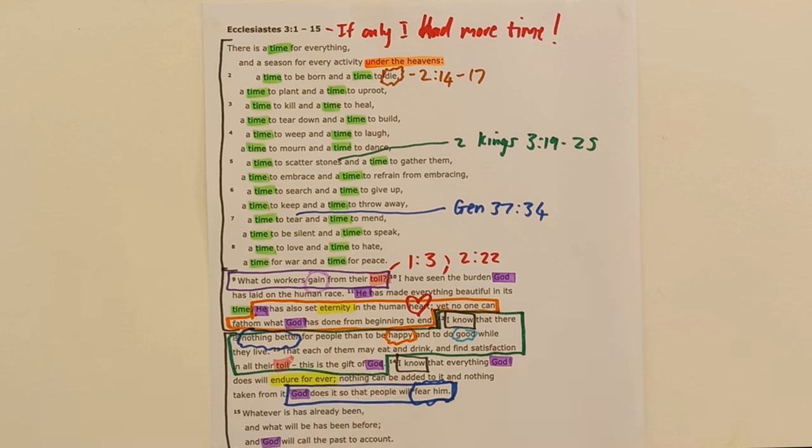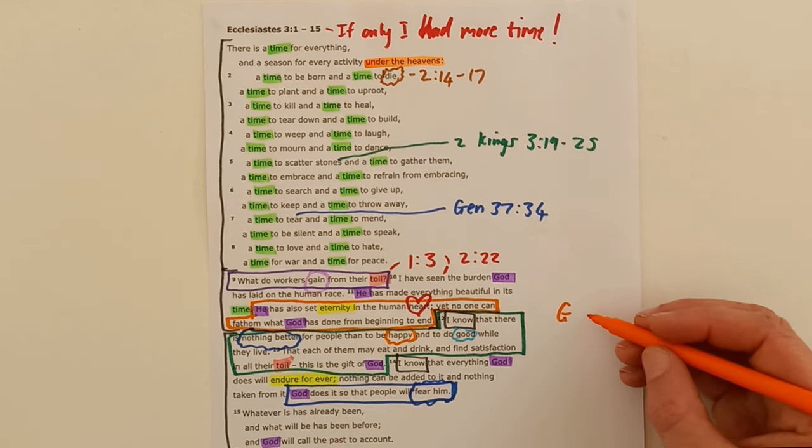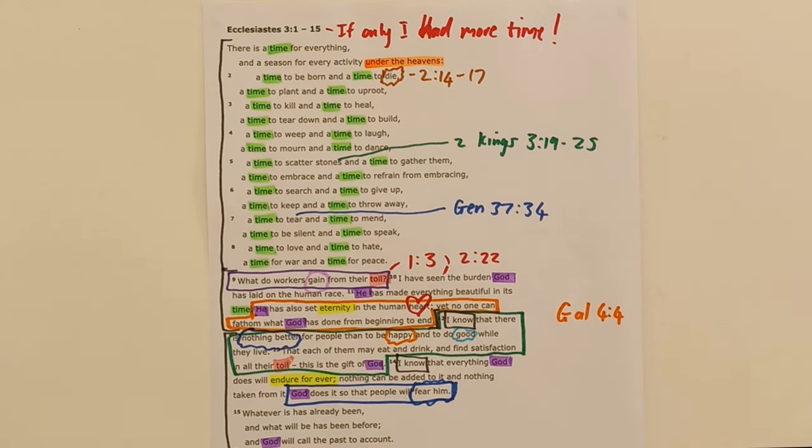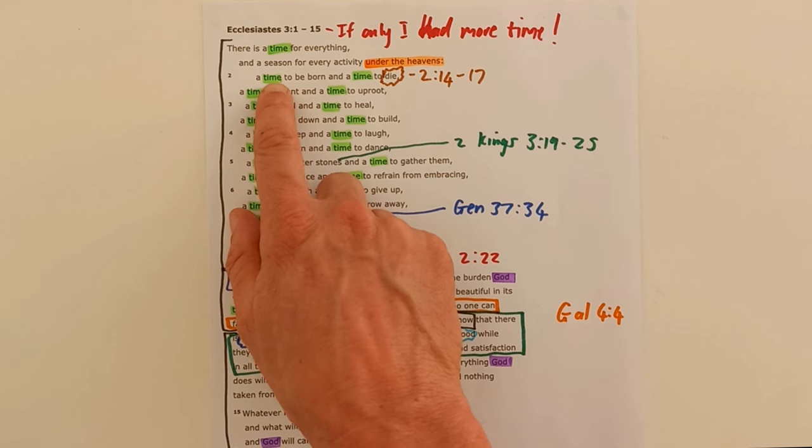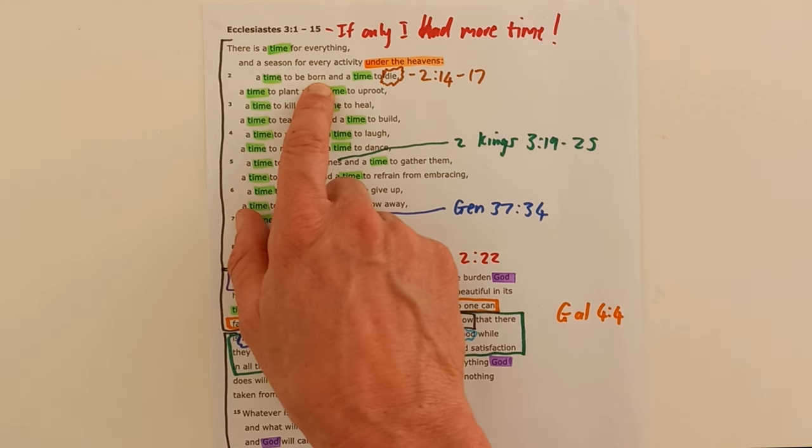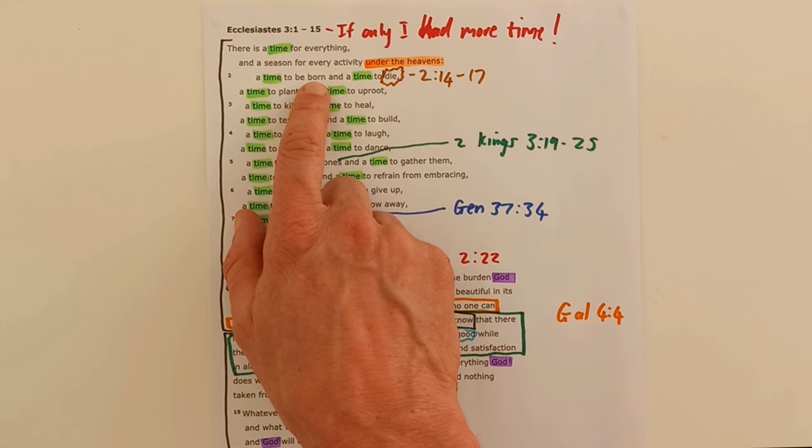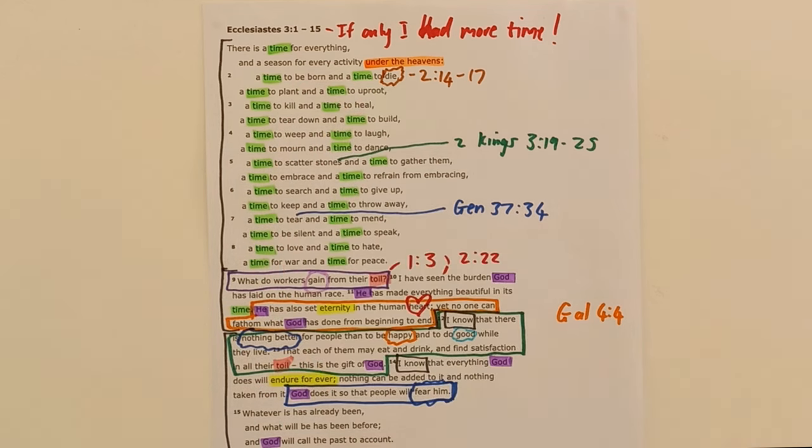Now as we reflect on this passage as Christians, one of the most incredible things that we see is that this God, who is outside of time, at just the right time, did something extraordinary. He stepped into the world he had made. He set a time when he would come. And one passage that reflects on this is Galatians 4 verse 4, which says that when the set time had come, had fully come, God sent his son. When the set time had fully come, God sent his son to be born of a woman. A time to be born. And then we also know importantly that when God came, he also set a time to die.